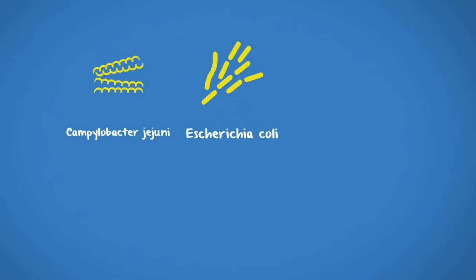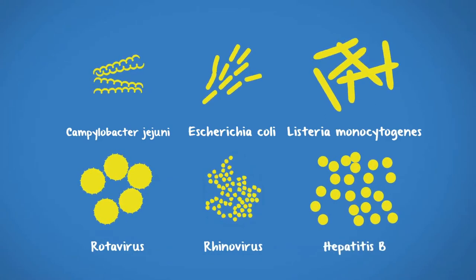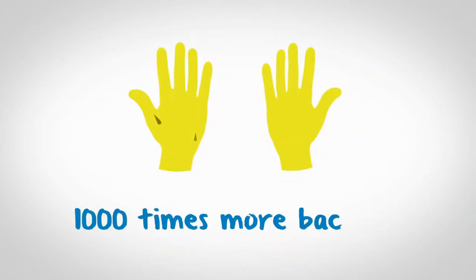Contaminated hands can transfer viruses to more than five surfaces or 14 other objects. 80% of infections are spread through hand contact. Damp hands spread 1000 times more bacteria than dry hands.